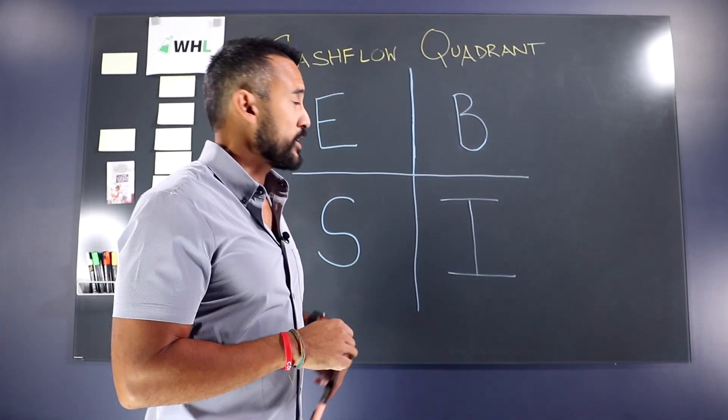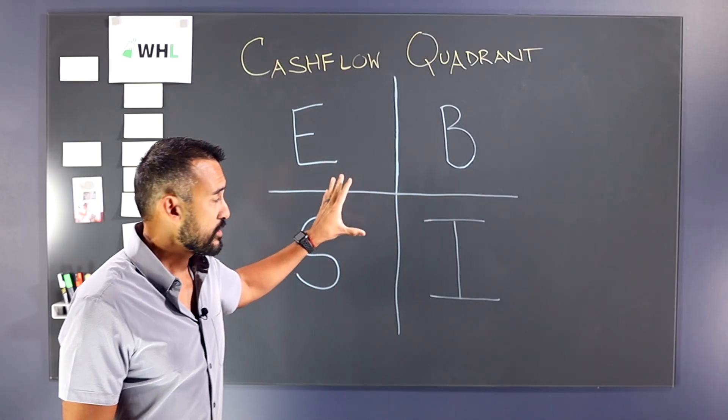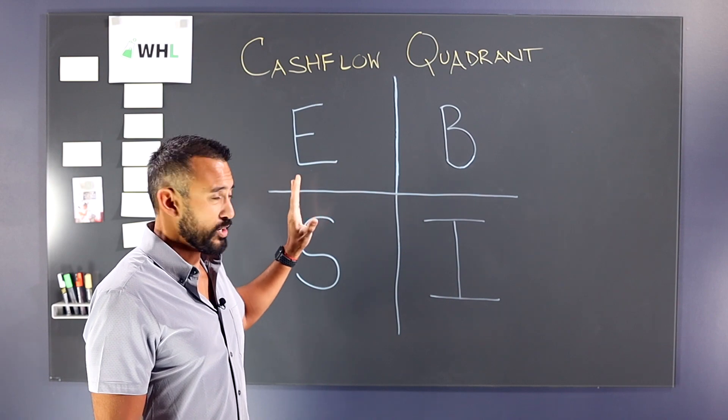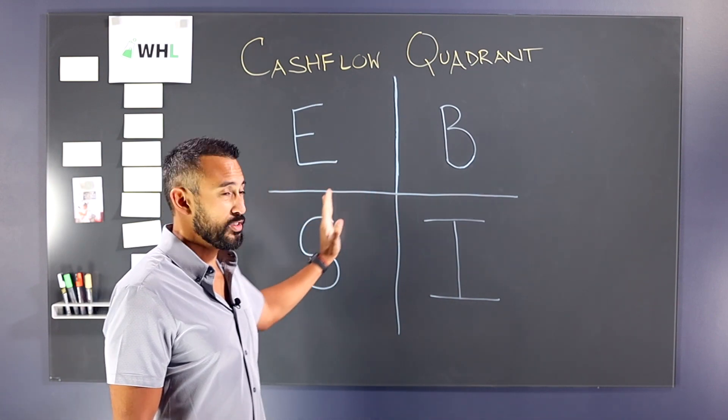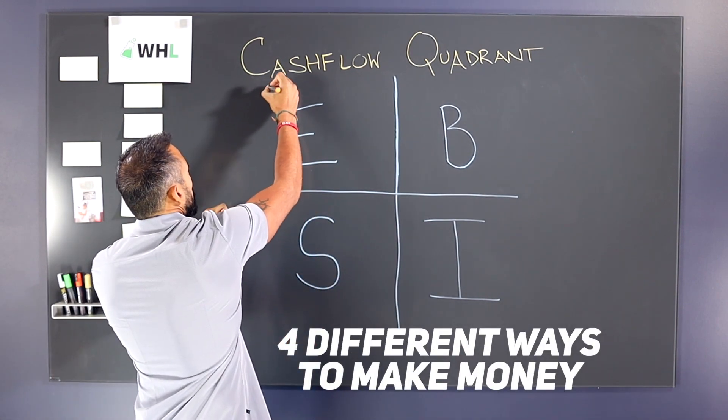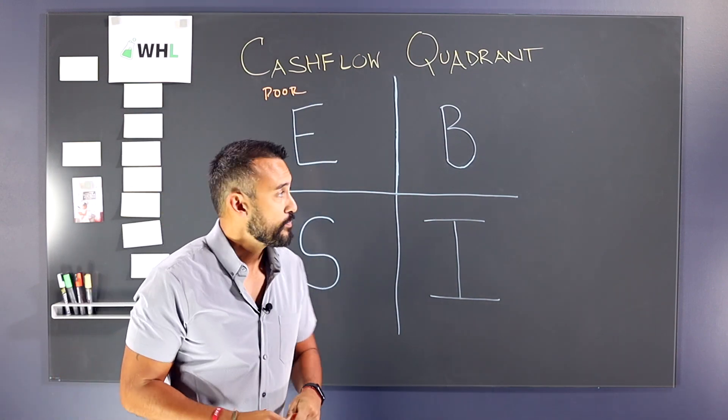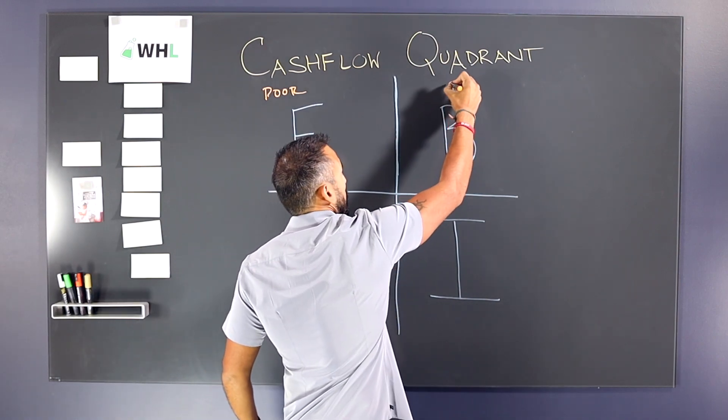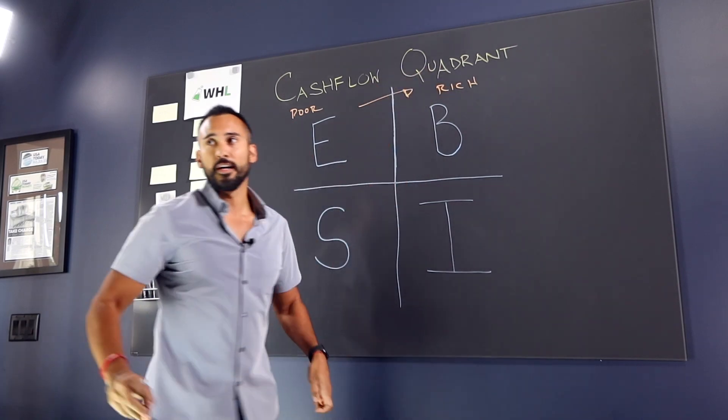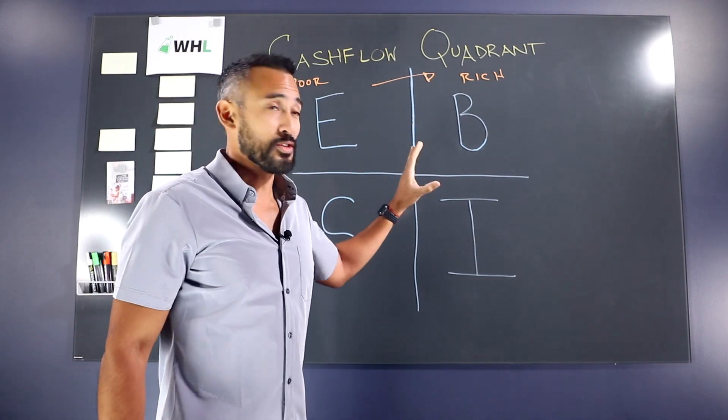So for those that aren't familiar with the cash flow quadrant, this is basically the four different ways that Kiyosaki talks about that you can make money. And the ultimate goal that you want to do is that you want to get on the right side of the quadrant. Because if you're on the left side of the quadrant, you are staying poor, having that poor mindset. So you want to go from poor and you want to become rich. And the only way to do that is to go to this side.